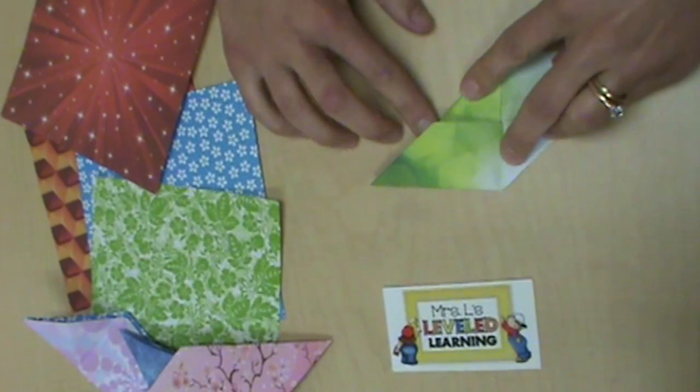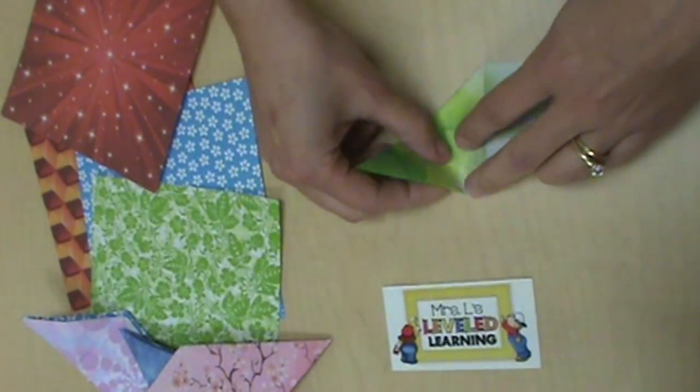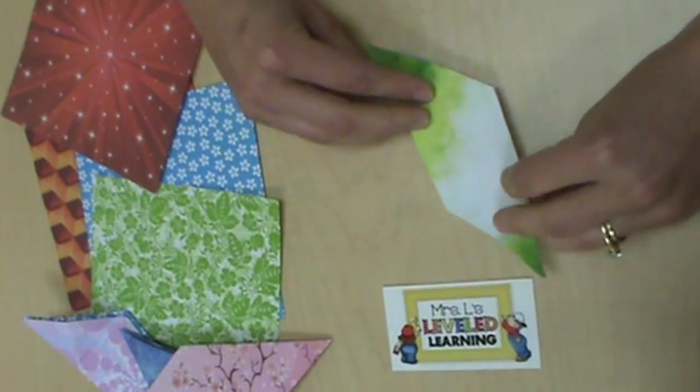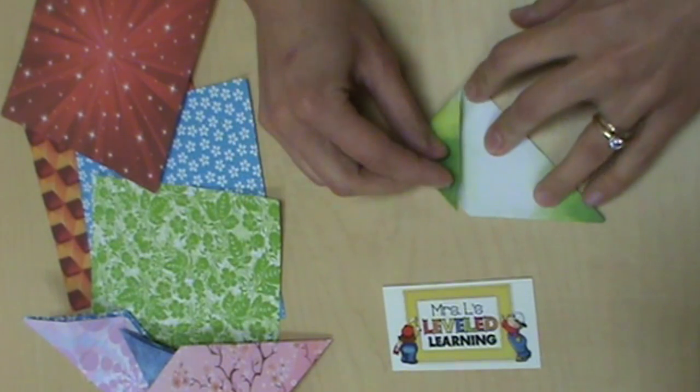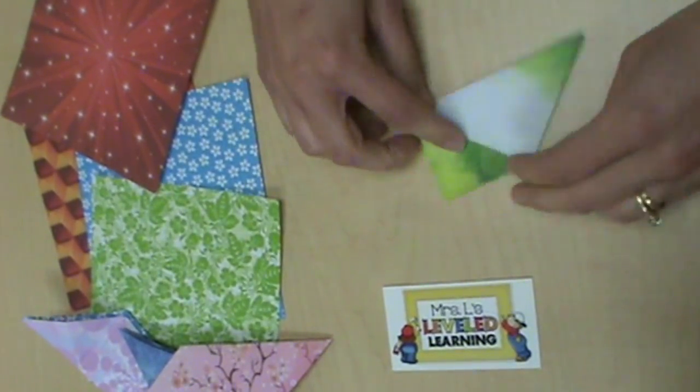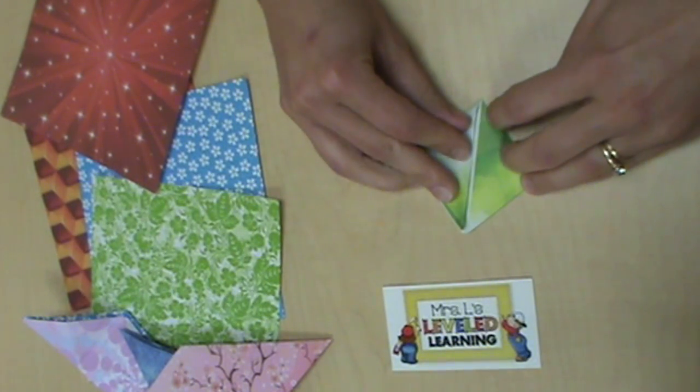Do the same thing on the opposite side. Fold each triangle backwards so that you see two triangles overlapping with the central square.